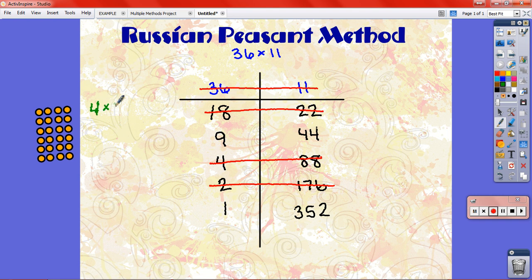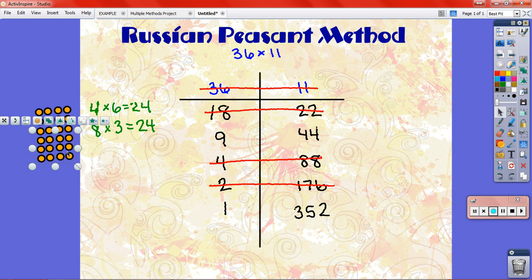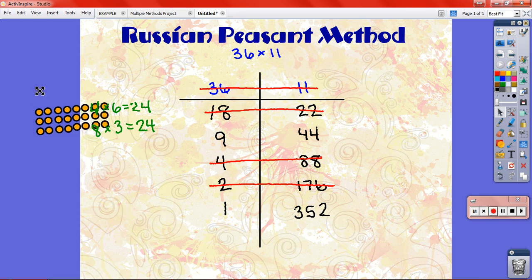So if I cut 6 in half, I get 3. And if I double 4, I get 8. And 8 times 3, if you know your times tables, you know that's 24. Let's show it on our model. I cut the 6 in half, so I cut it in half going this way. And I doubled the 4. So it was 4 wide. Now it's 8 wide. It's still 24. It's just that now it's 3 tall and 8 wide.